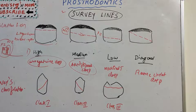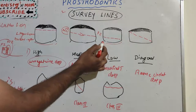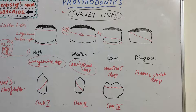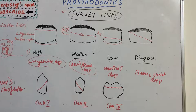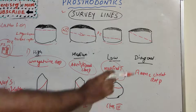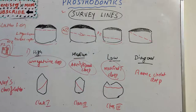The low survey line is situated close to and parallel to the gingival margin. It frequently occurs as a result of marked inclination of the tooth and may also occur on a conically shaped tooth. When there is marked inclination or a conical tooth, we use a low survey line, and the clasp used is the modified T clasp.